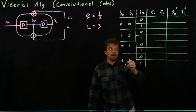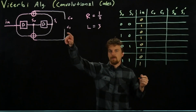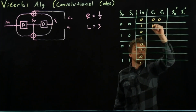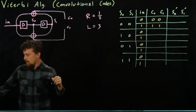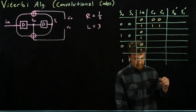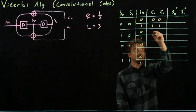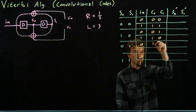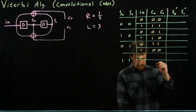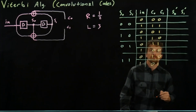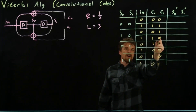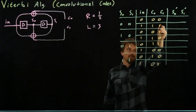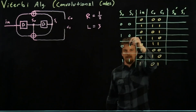You can check the math using modulo-2 addition with the bits connected to each adder. For state 0,0 with input 0 the output is 0,0; with input 1 it's 1,1. For state 1,0 with input 0 the output is 0,1; with input 1 it's 1,0. For state 0,1 with input 0 it's 1,1; with input 1 it's 0,0. And for state 1,1 with input 0 it's 1,0; with input 1 it's 0,1. So we get two output bits for every one input bit, and the output depends on the current state.